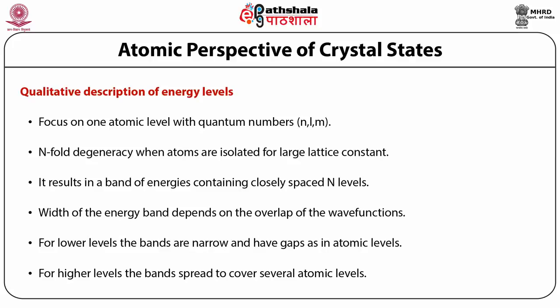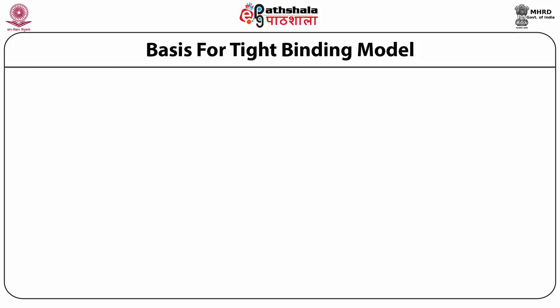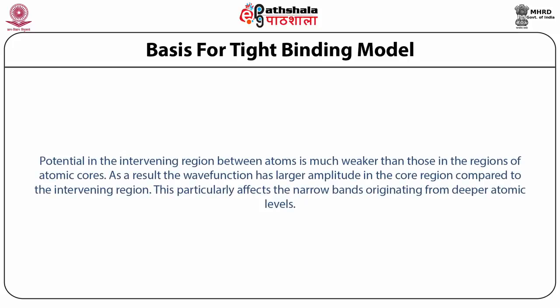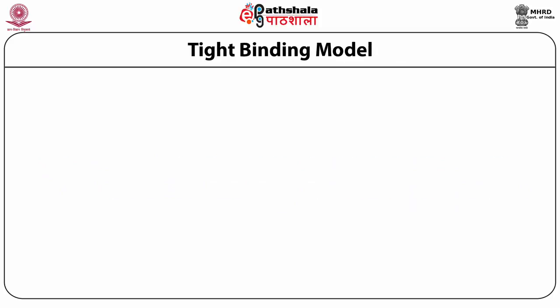The method described here is useful for only narrow bands and is complementary to the weak potential analysis, which is suitable for free particle-like bands in the conduction band of a solid. The tight binding method is based on the observation that the potential in the intervening region between atoms is much weaker than in the regions of atomic cores, so the wave function has larger amplitude in the core region. Let us elaborate these ideas first for a crystal with one atom per cell.